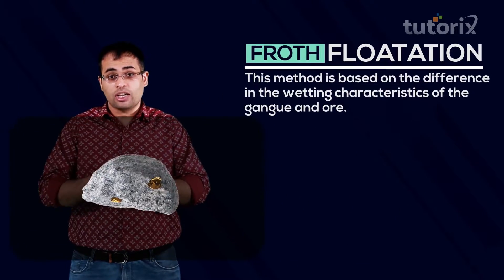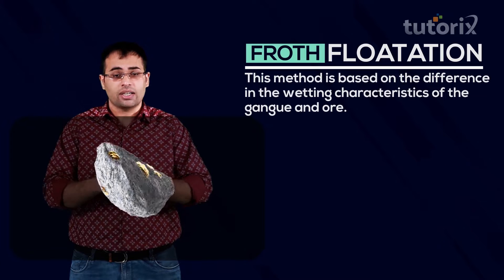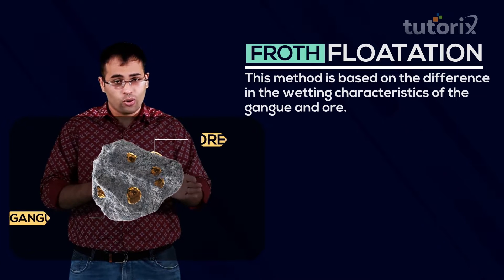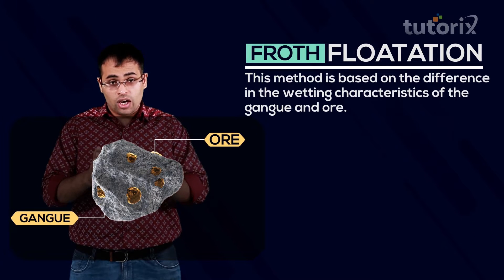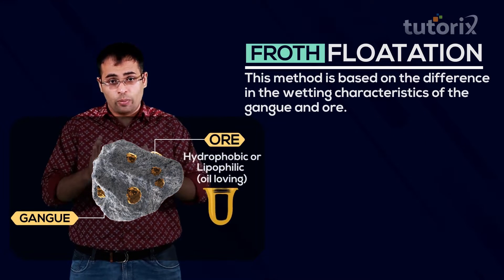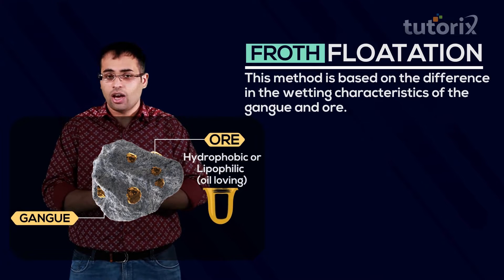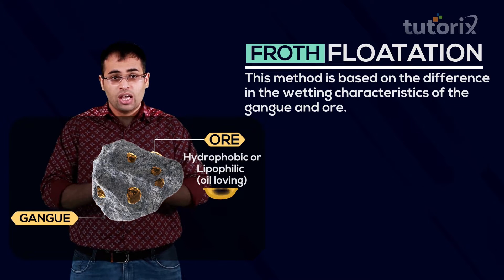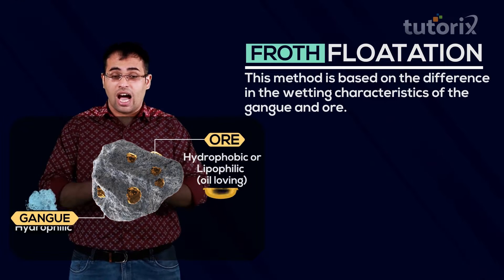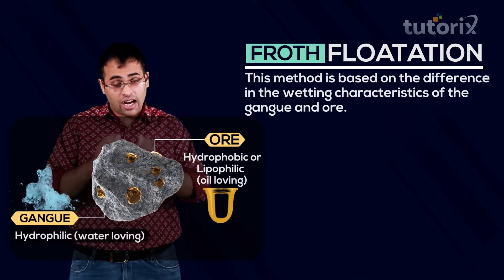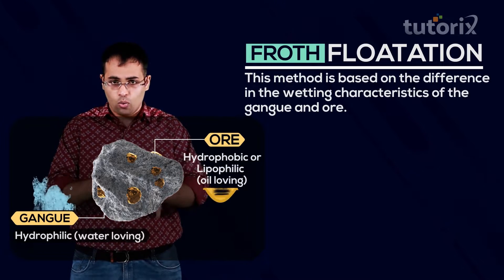This process makes use of the difference in wetting characteristics of ore and gangue particles, where the ore particles are hydrophobic and are preferentially wetted by oil, whereas the gangue particles are hydrophilic and are preferentially wetted by water.